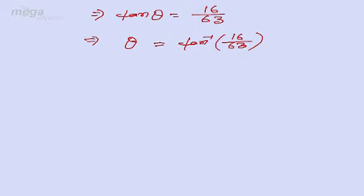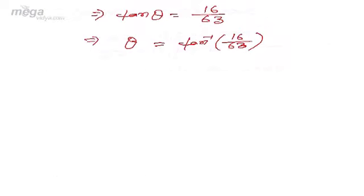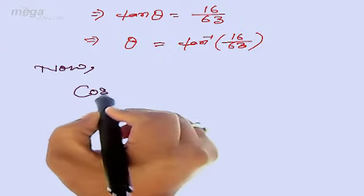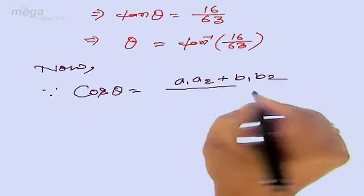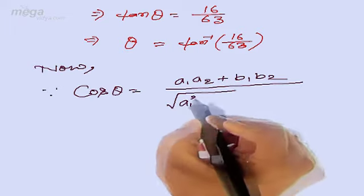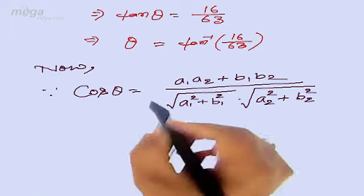Student, you can see from the question the first option is tan inverse 16 by 63. The other two options are in cos inverse also. So we will check for cos inverse — that means we will check the third option and the fourth option also. What will be the angle in terms of cos? Now we will find the angle by using cos theta. The formula is: cos theta equals a1 a2 plus b1 b2 divided by root of a1 squared plus b1 squared into root of a2 squared plus b2 squared, and then we put the mod.